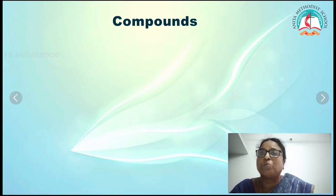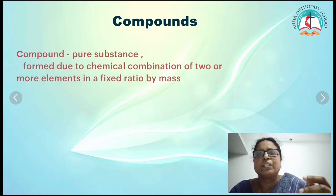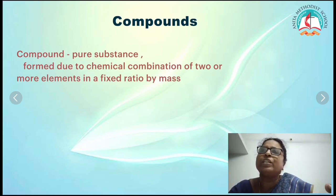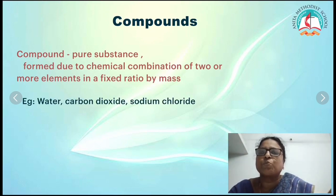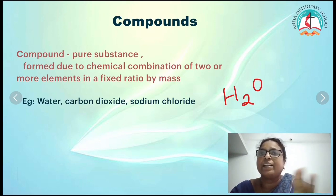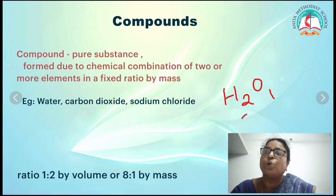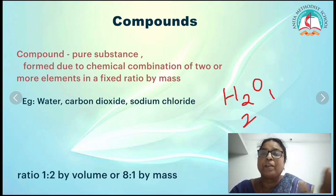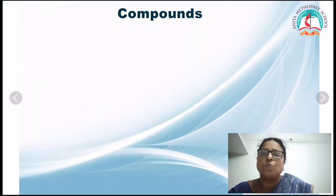Next, what is a compound? A compound is a pure substance formed due to the chemical combination of two or more elements in a fixed ratio by mass. Examples are water, carbon dioxide, and sodium chloride. For water H₂O, there are two atoms of hydrogen and one of oxygen — the ratio by mass is 8:1.